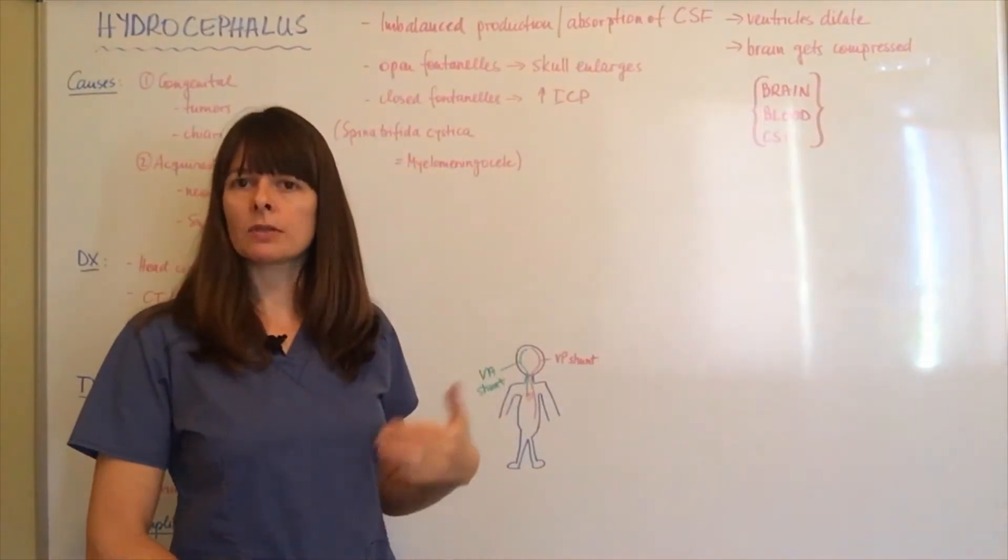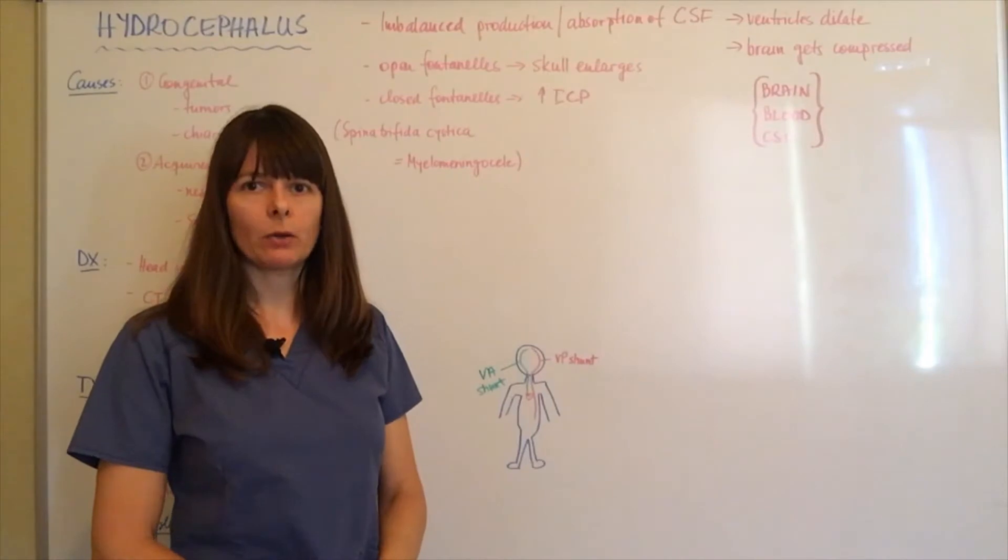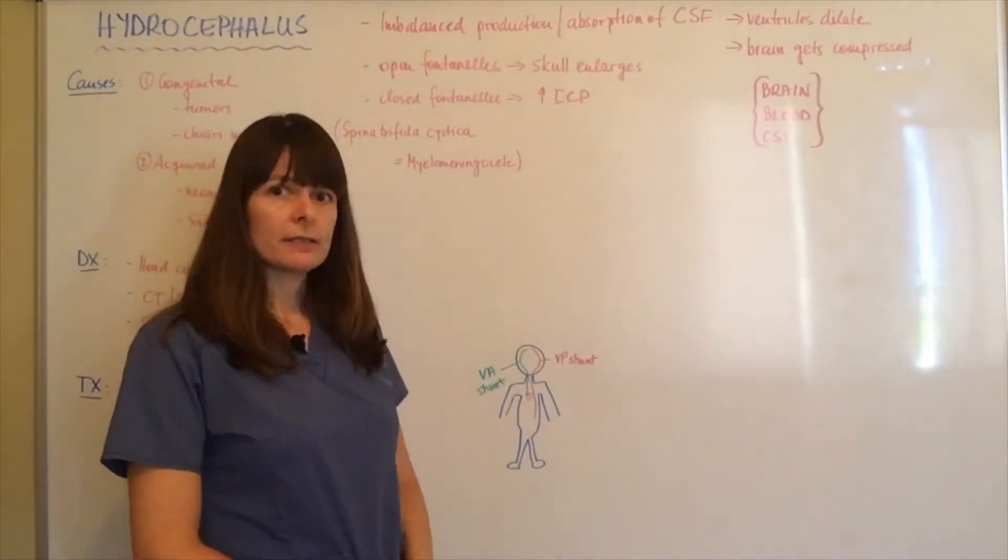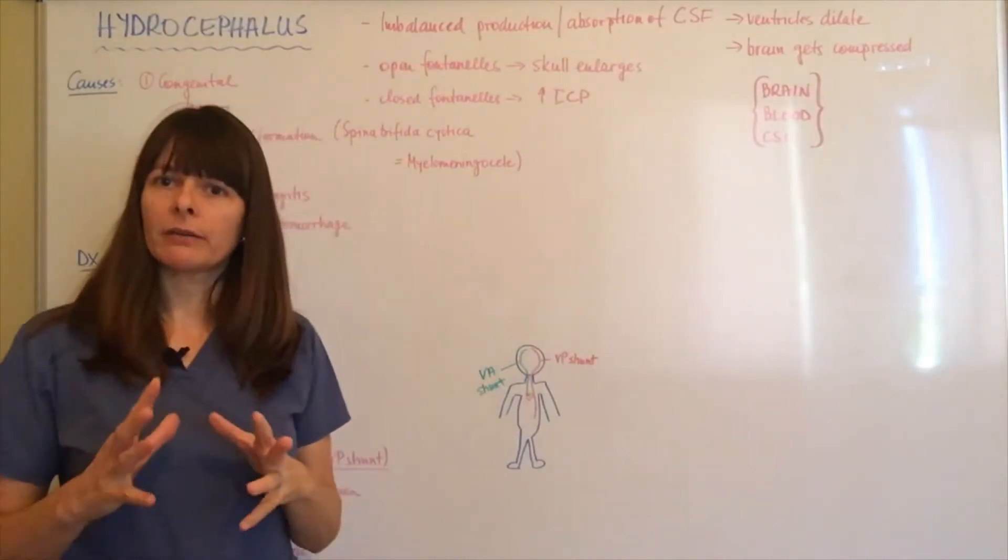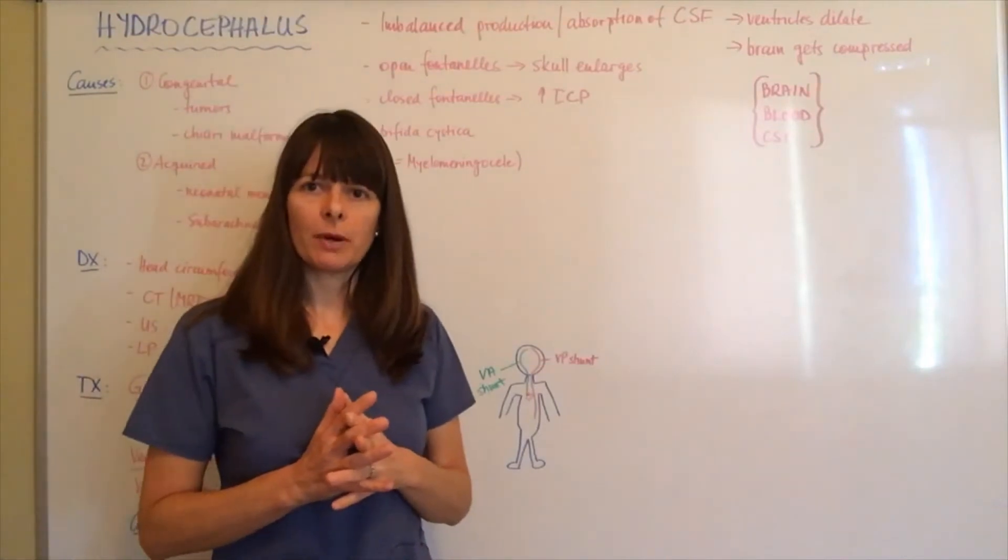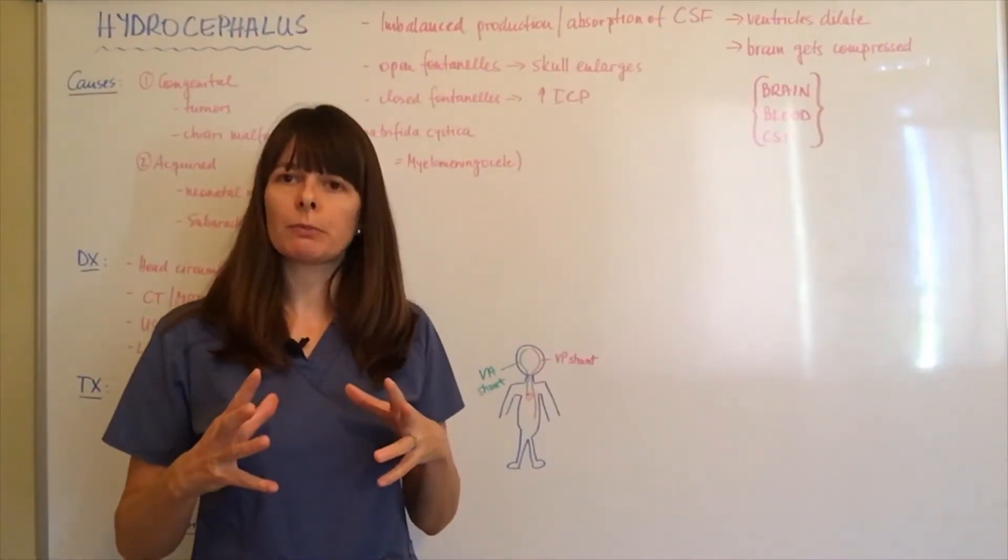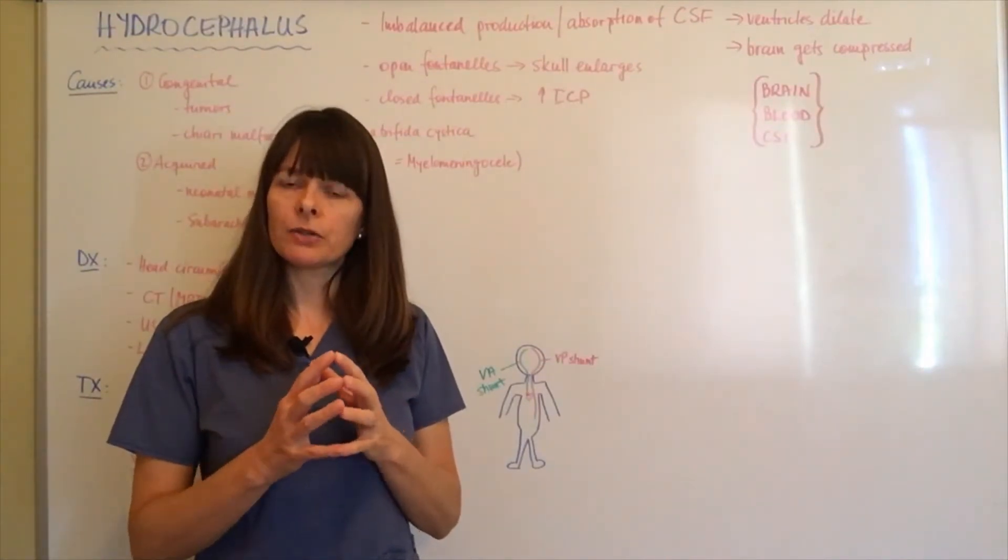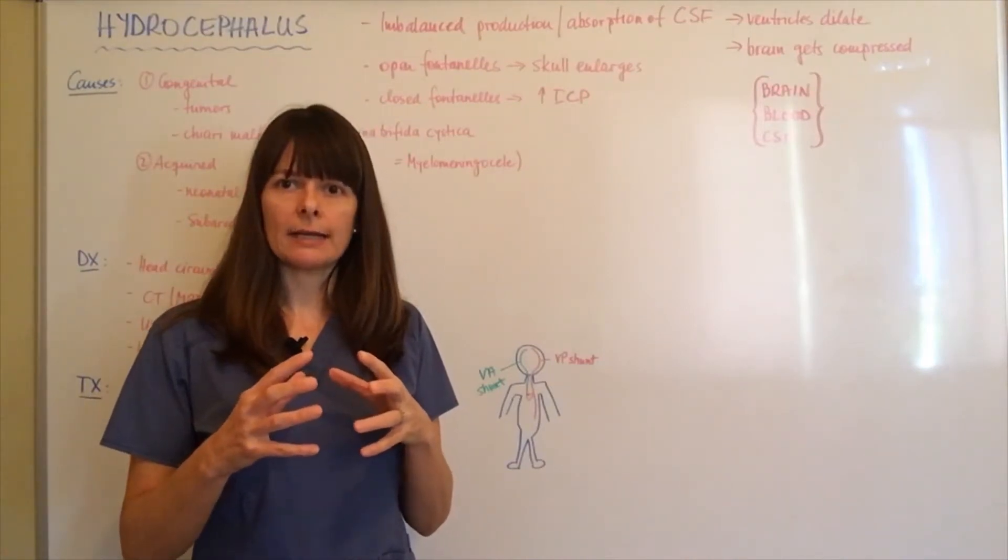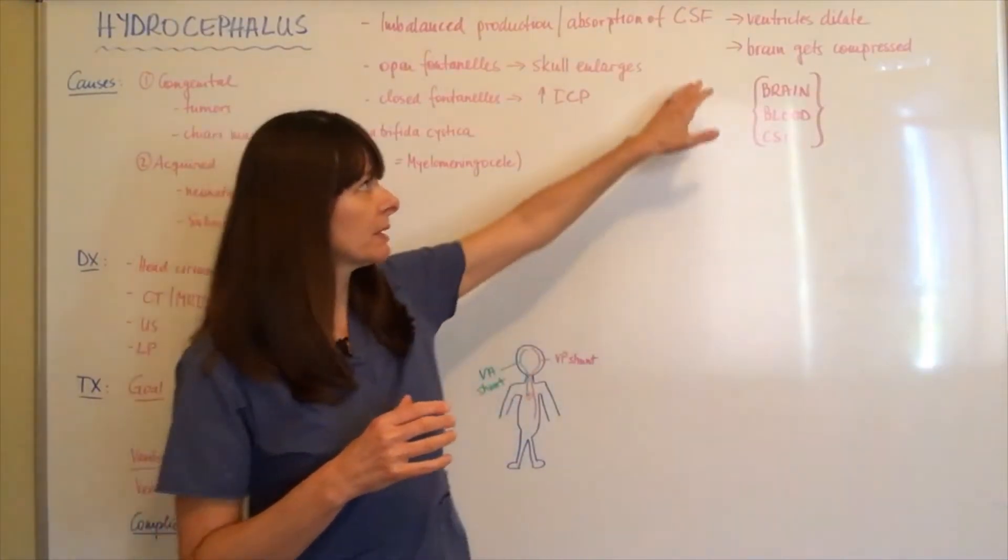CSF is usually contained within the ventricles of the brain, but when there's too much cerebral spinal fluid, the ventricles inside the brain will dilate. When that happens, the brain gets compressed.